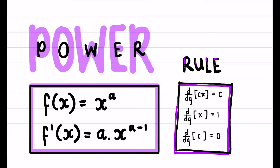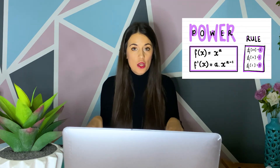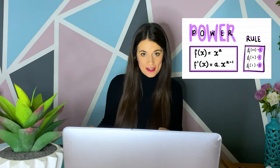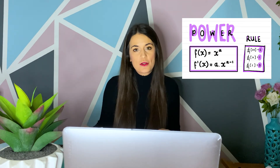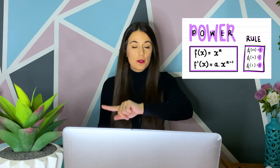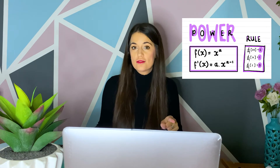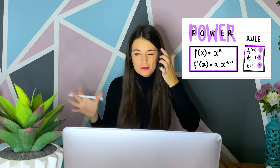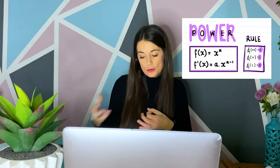If we look at our power rule, we have our function being x to the power of a. In order to derive using the power rule, we take our exponent, multiply it with the coefficient of x, and then reduce that exponent by 1. So: exponent times the coefficient of x, reduce the exponent by 1. We have three extra rules that we need to know with the power rule.